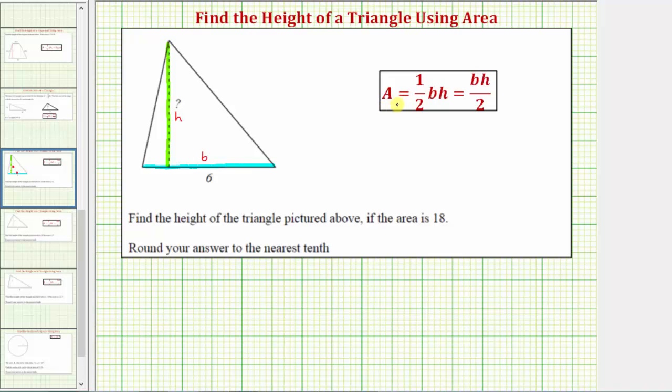And sometimes we'll see the area formula written as base times height divided by two, because dividing by two is equivalent to multiplying by one-half, but we'll go ahead and use this form of the area formula.